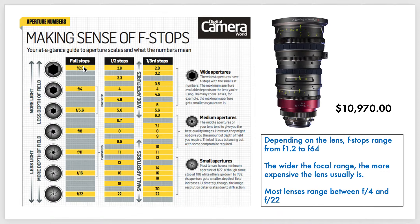The larger f-stop is giving us more light, but we're going to have less depth of field. And the smaller f-stops bring in less light, but they offer you more depth of field.